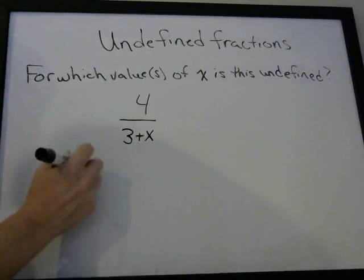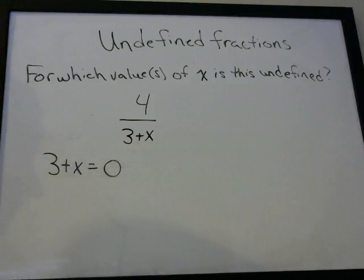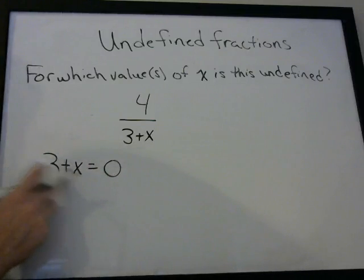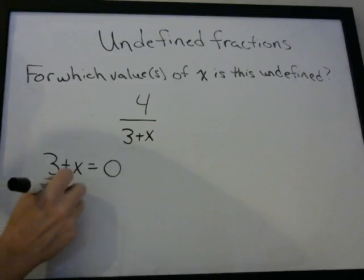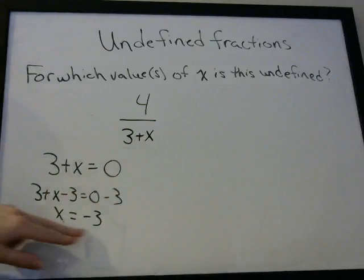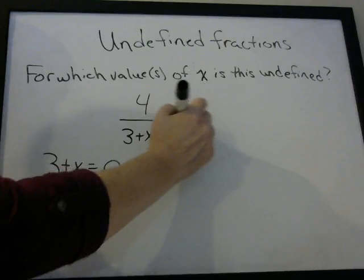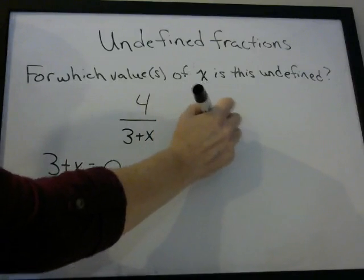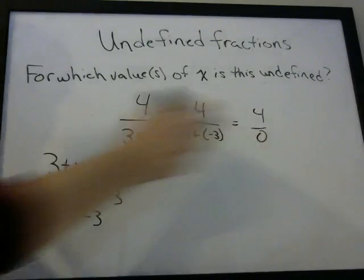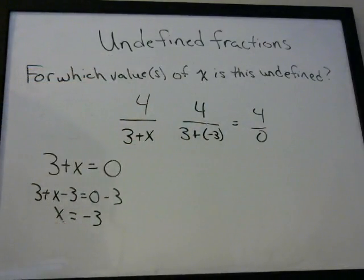We just have a simple algebra problem: when does three plus x equal zero? For what values of x does it equal zero? We have to get x by itself — get rid of the three. Three minus three is zero, zero minus three is negative three. So when x equals negative three, there's going to be a zero in the denominator. Three plus negative three is zero. So for which value of x is this undefined? It's when x equals negative three.